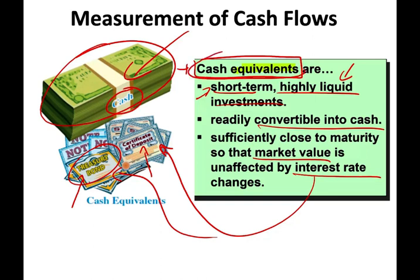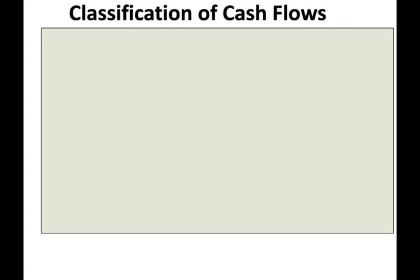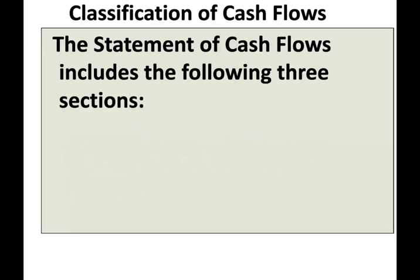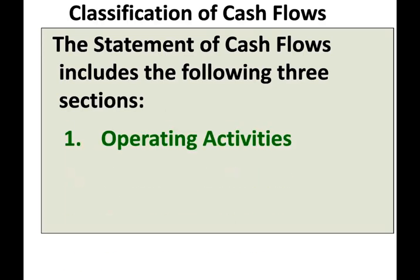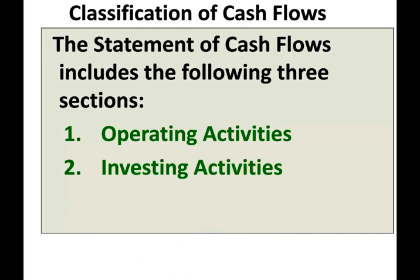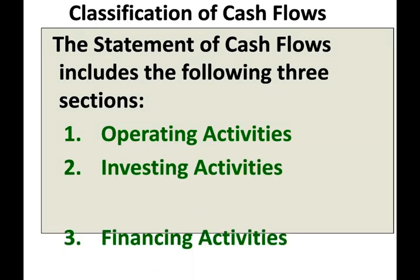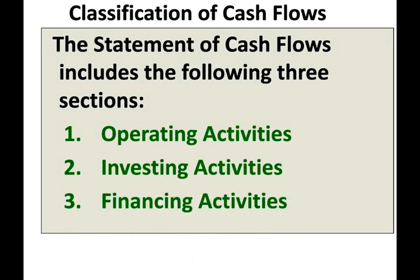Cash plus cash equivalents is what we are looking at for the change. The statement of cash flows classifies the changes in cash into three categories, and we're going to look at those three categories in detail — devoting a lecture for each. In this session, I'm going to give you an overview of each category: one, operating activities; two, investing activities; three, financing activities.